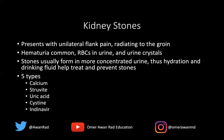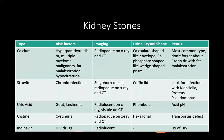There are five types of stones you should know: calcium, struvite, uric acid, cysteine, and indinavir. Calcium stones are by far the most common type — up to 80% of kidney stones are calcium, either calcium oxalate or calcium phosphate.